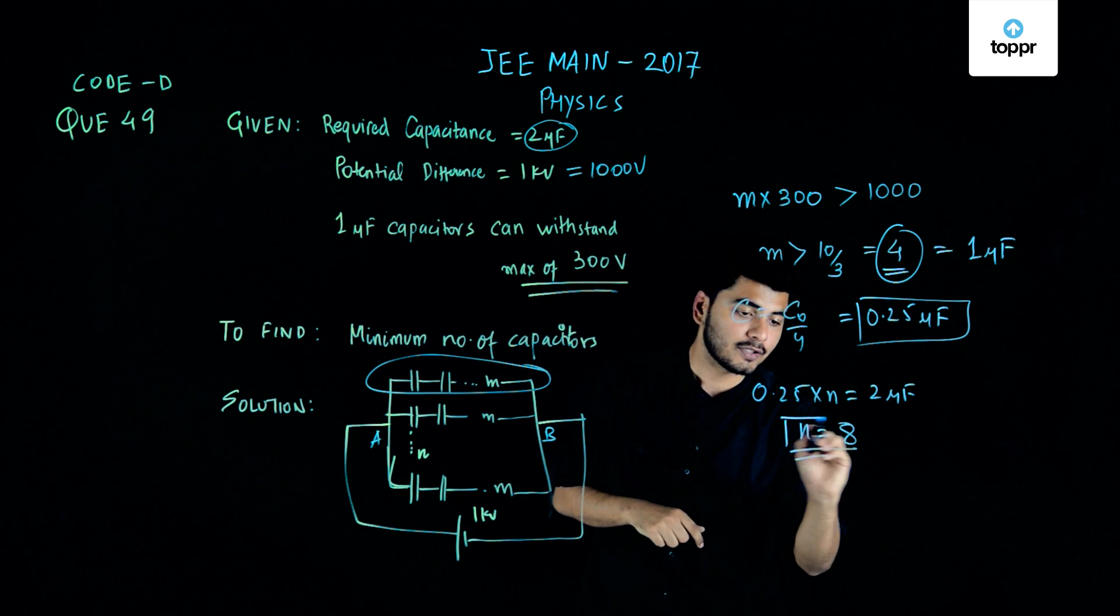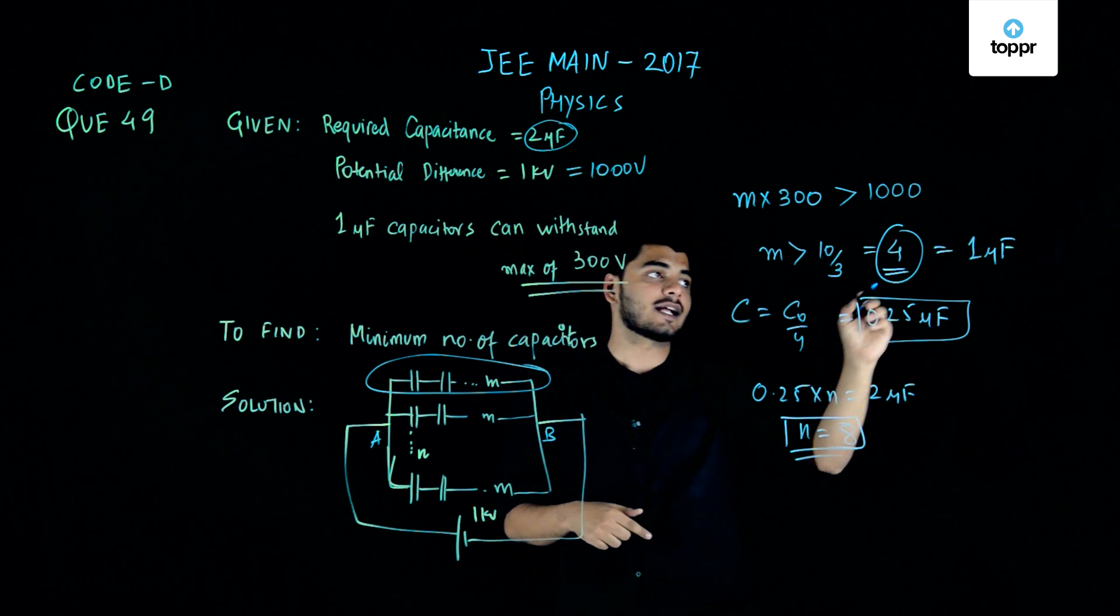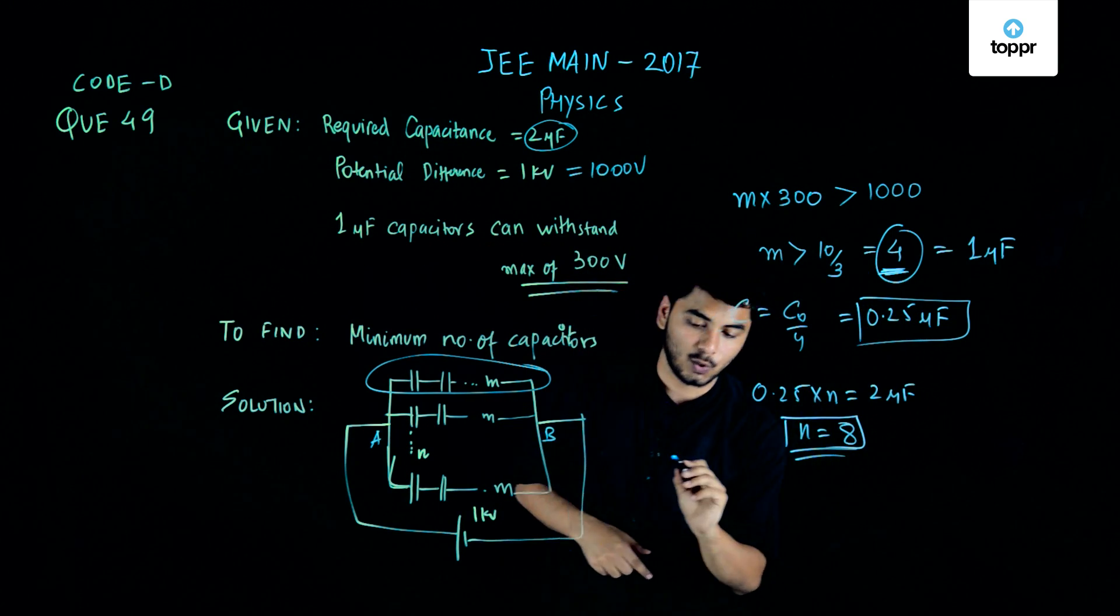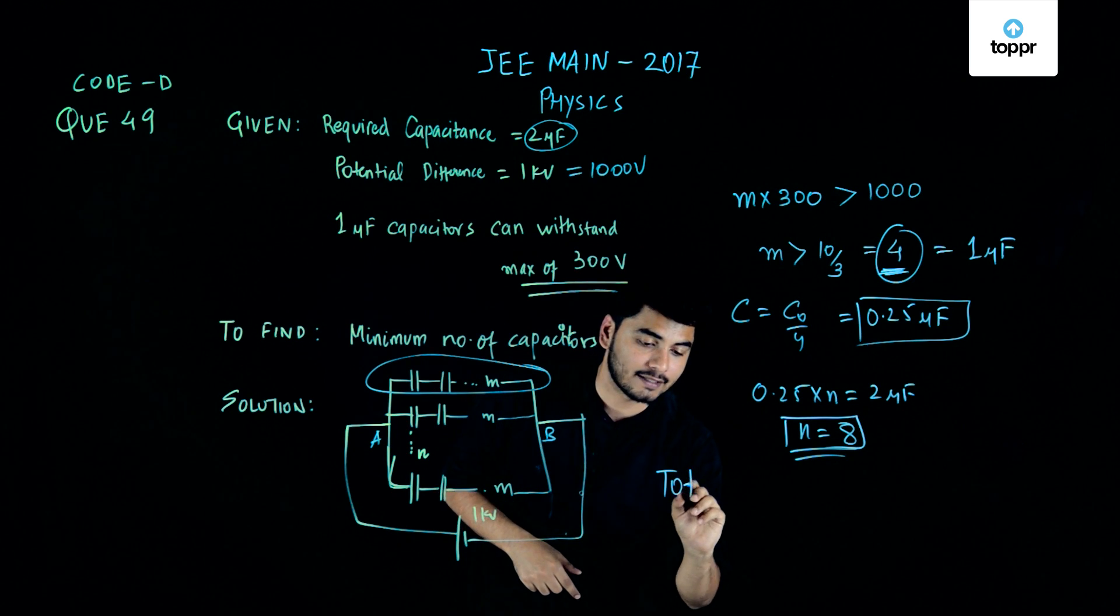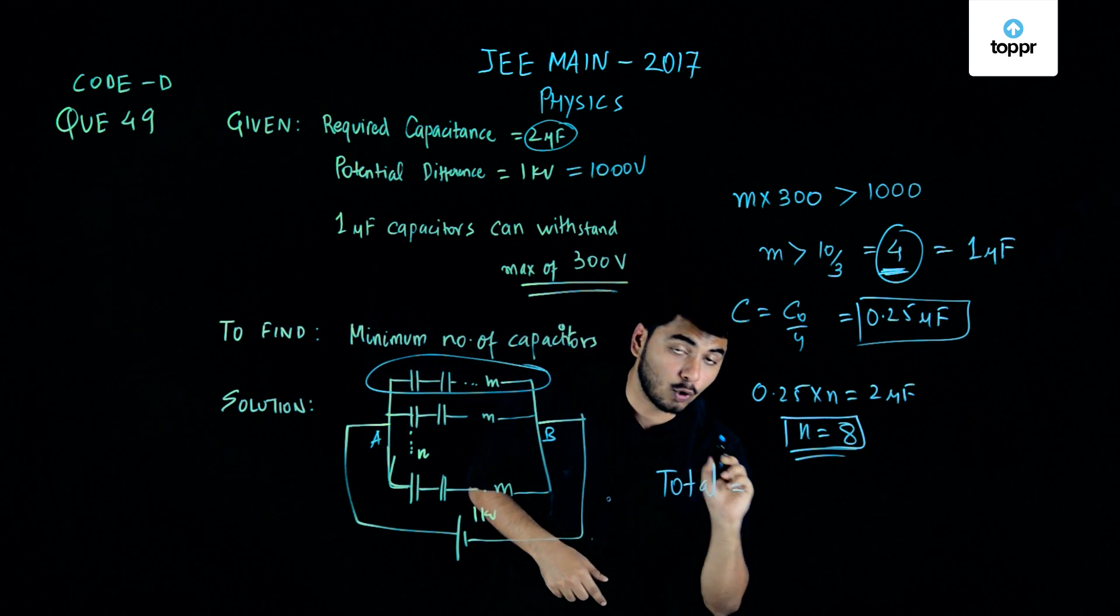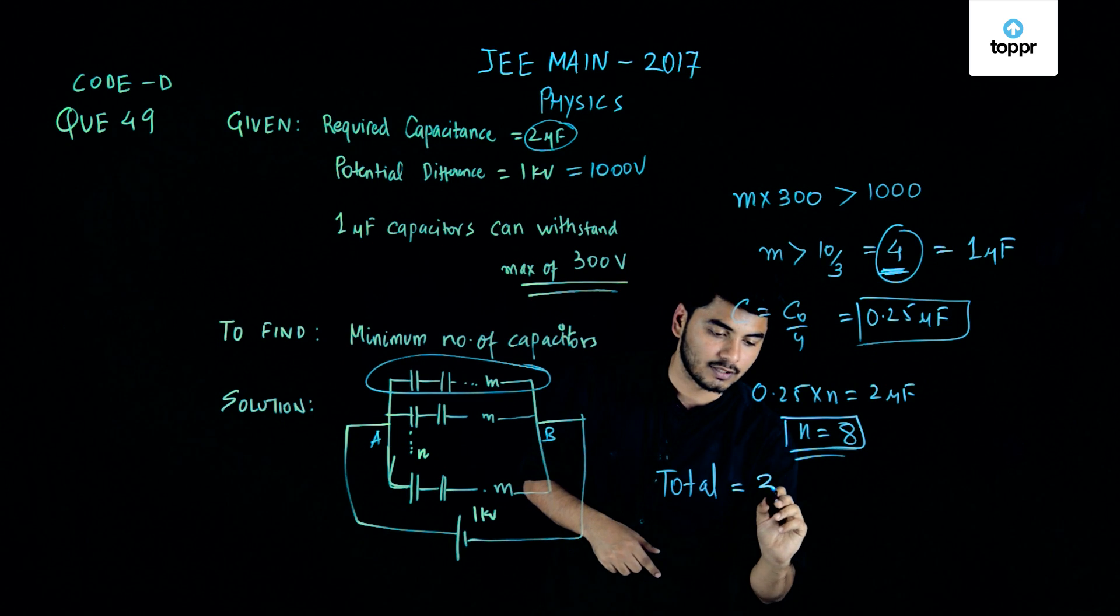Now the total number of such branches is 8 and the number of capacitors in each branch is nothing but equals to 4. So the total number of capacitors of capacitance 1 microfarad required would be nothing but m cross n which is equal to 32.